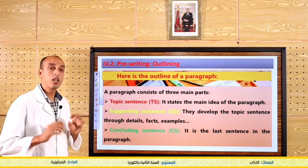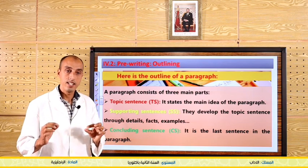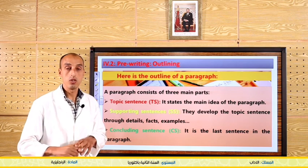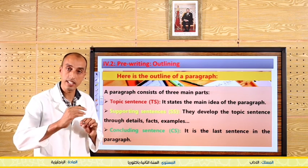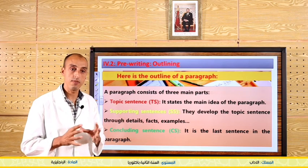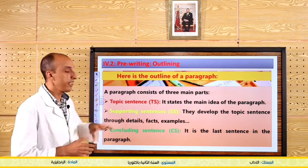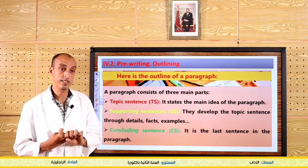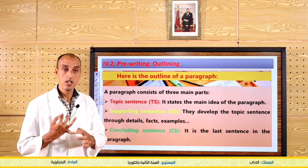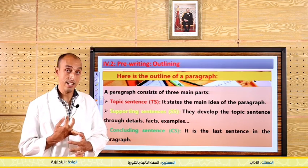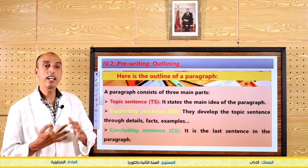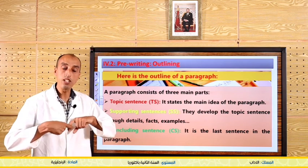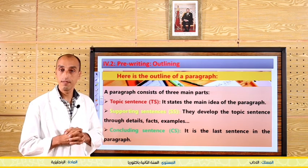Then we have a concluding sentence — it's the last sentence in the paragraph. Be careful not to skip a line; you continue in the same paragraph. To recapitulate: a paragraph consists of three main parts — topic sentence (TS), supporting sentences (SS), and concluding sentence. You can write linking words to link the sentences of your paragraph.